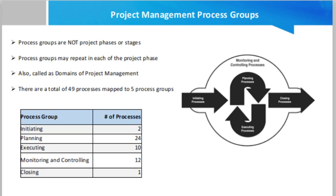Whenever we talk about project management, process groups are described in the Project Management Body of Knowledge. There are five process groups: initiating, planning, executing, monitoring and controlling, and closing. Initiating has two processes, planning has 24, executing has 10, monitoring and controlling has 12, and closing has one.